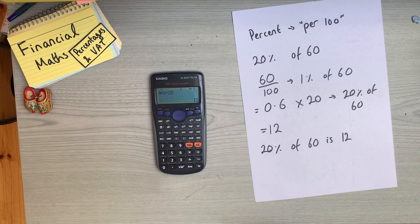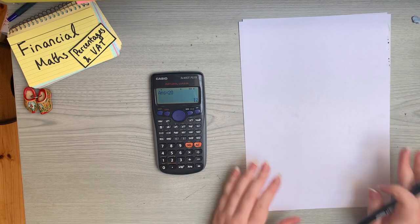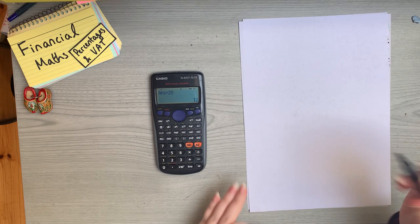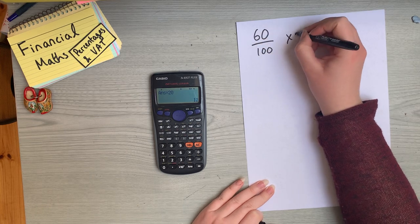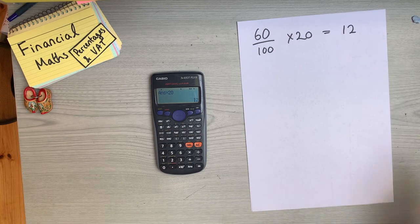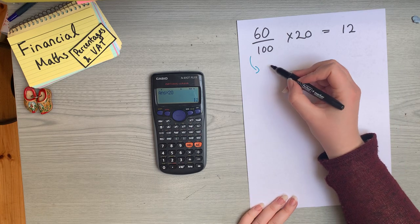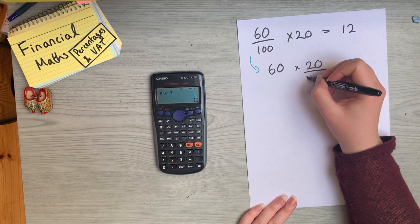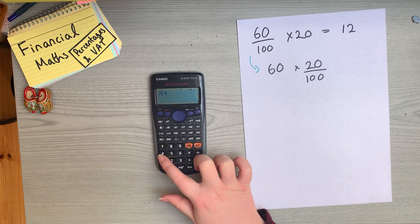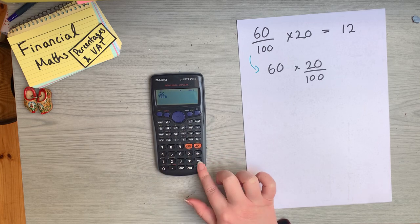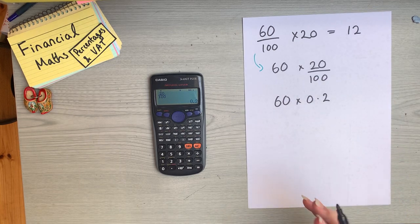That's the long-winded way of doing it, but that's the theory behind it. The handier way: what we did was divide 60 by 100 and then multiply by 20 to get 12. Another way of writing this — if you go back to the video about multiplying fractions together — this is the exact same as 60 times 20 over 100. Now 20 over 100, if you put it into your calculator, is 0.2, and that is 20% in decimal form.